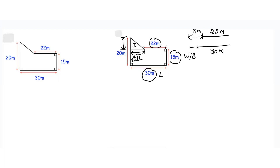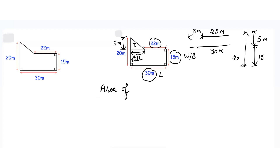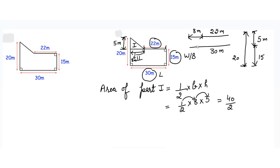Similarly, if I see the total height is given as 20 and the part of the height is given as 15. We have to find out the remaining height, so it would be equals to 5 meters — that means the height is equals to 5 meters. So area of part 1 is equals to 1 by 2 into B into H. We'll put the values: 1 by 2 into B is 8 and height is 5. So 1 times 8 is 8, 8 times 5 is 40, divided by 2 which is equals to 20 meter square.